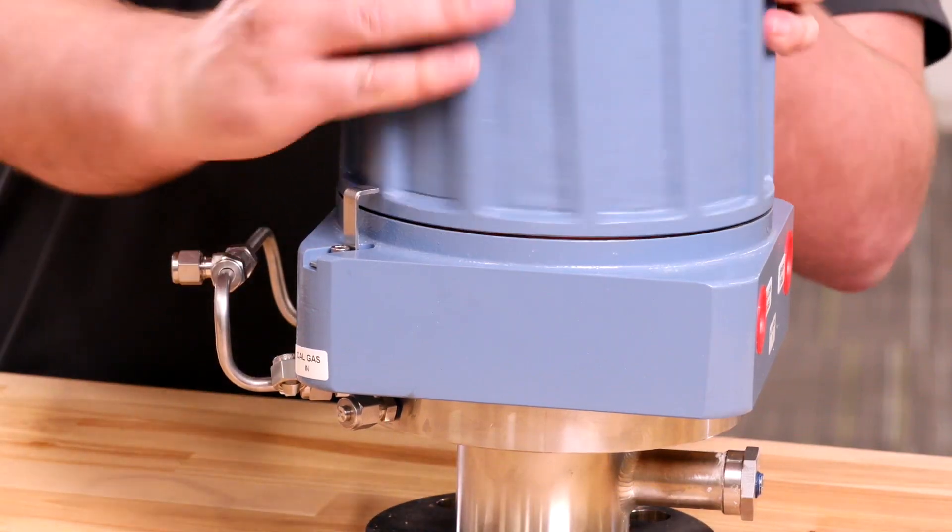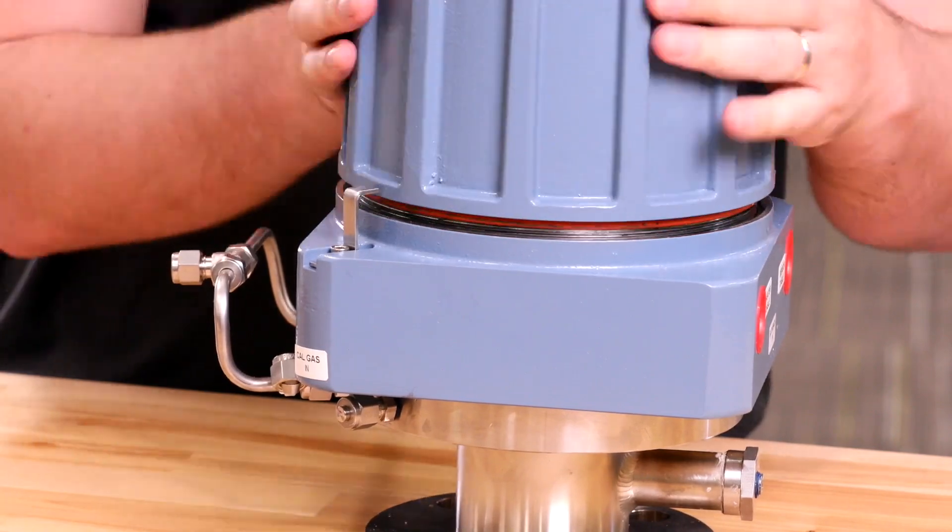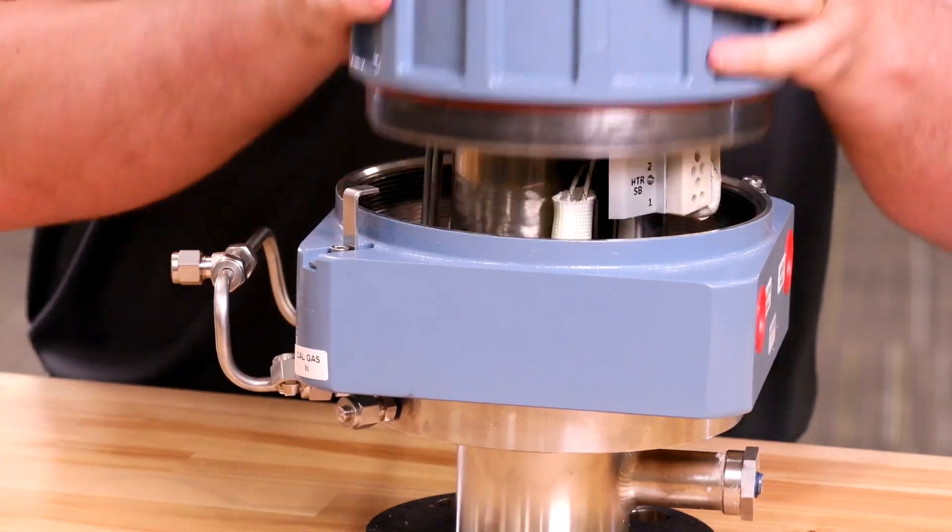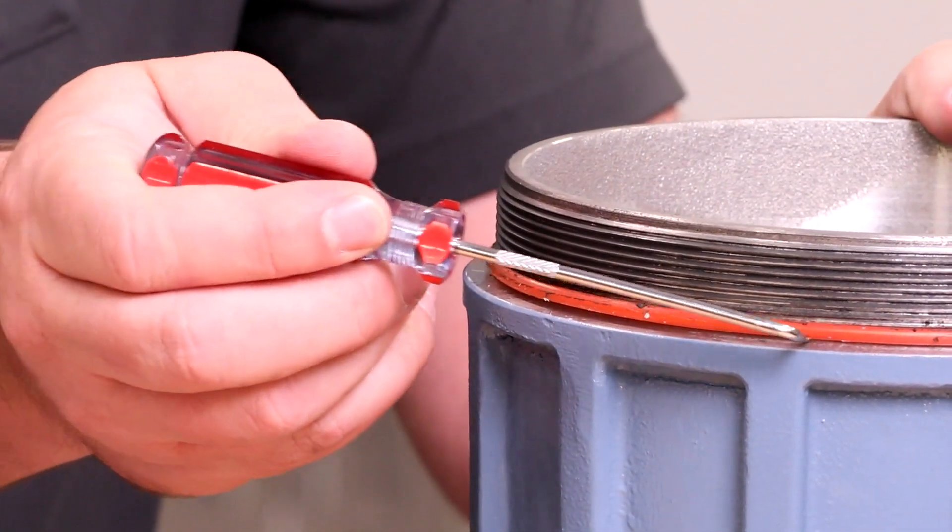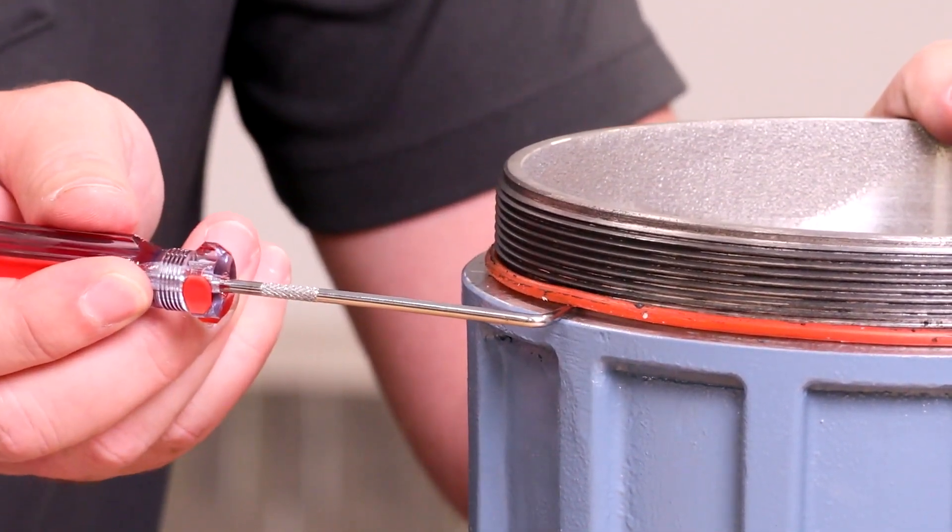With two hands, loosen and remove the cover. Inspect the cover o-ring for wear or damage. If the o-ring is damaged, it will need to be replaced.